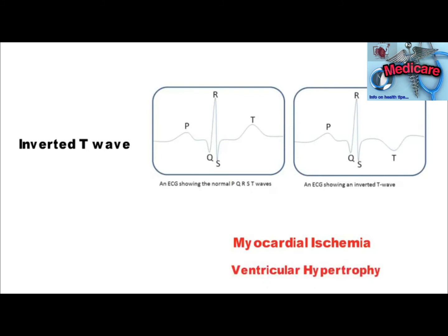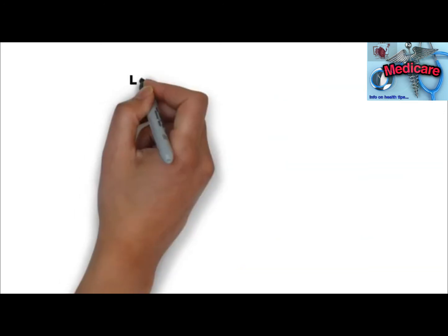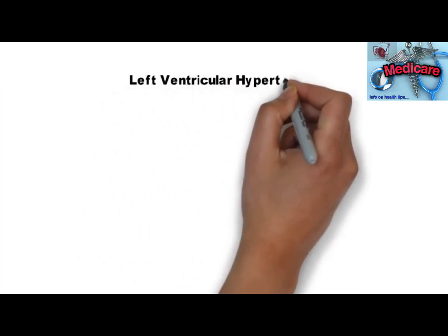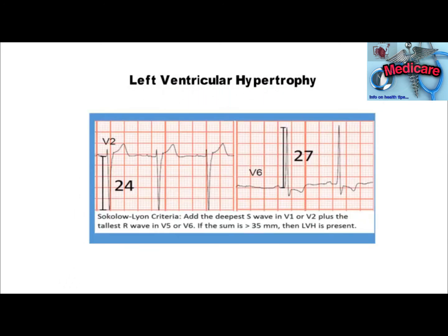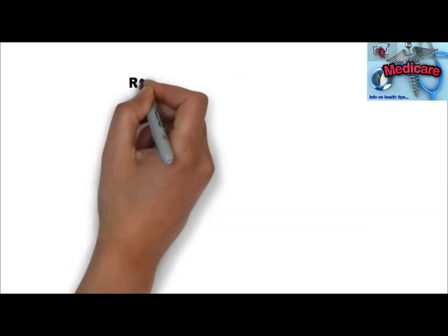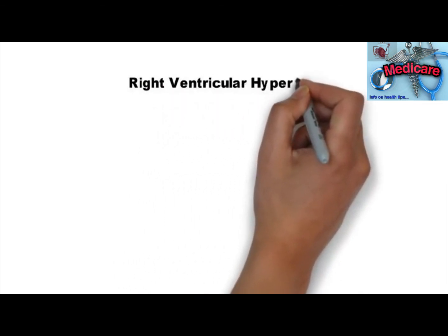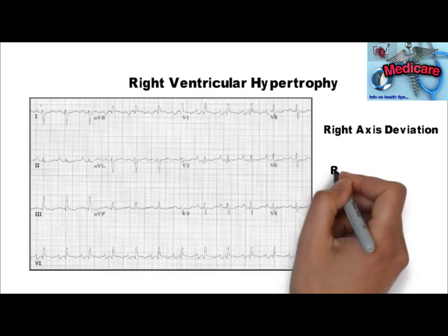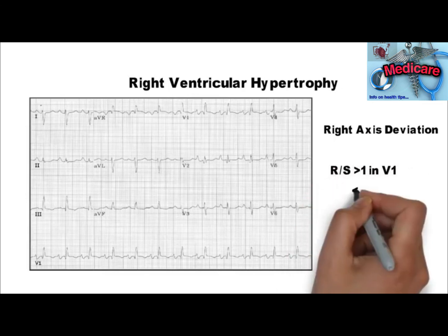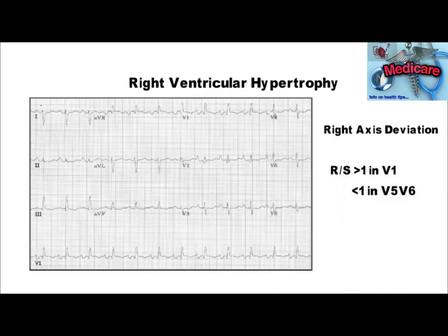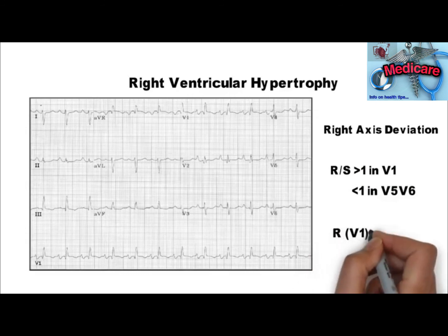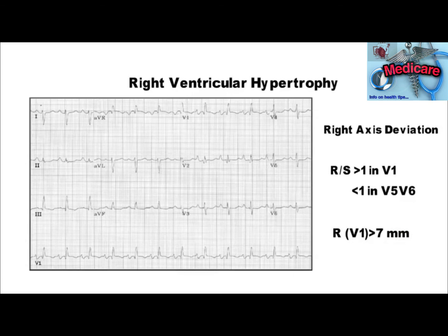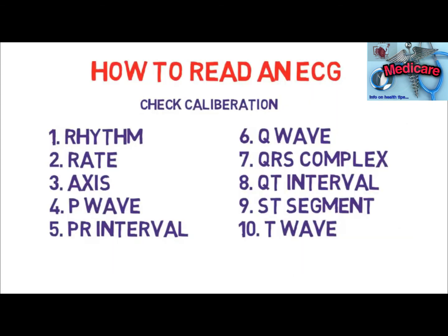Now let's discuss how the ECG looks in hypertrophy. In left ventricular hypertrophy, add the deepest S wave in V1 or V2 to the tallest R wave in V5 or V6 — if this is more than 35 mm, LVH is present. In right ventricular hypertrophy, there will be right axis deviation, R:S ratio more than 1 in V1 and less than or equal to 1 in V5 or V6, and R wave in V1 more than 7 mm. This is the simplest criteria to detect RVH.